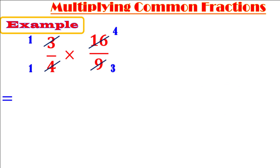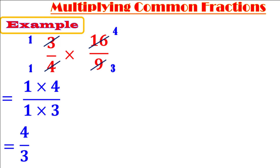The second step: multiply the remaining factors. 1 times 4 on top equals 4, and 1 times 3 on the bottom equals 3. So the product is 4 over 3. 4 over 3 is an improper fraction. We studied before that if we have an improper fraction, we should write it as a mixed number. So 4 divided by 3 equals 1 remainder 1, giving us 1 and 1 over 3.